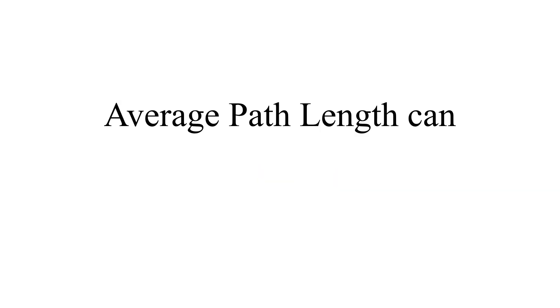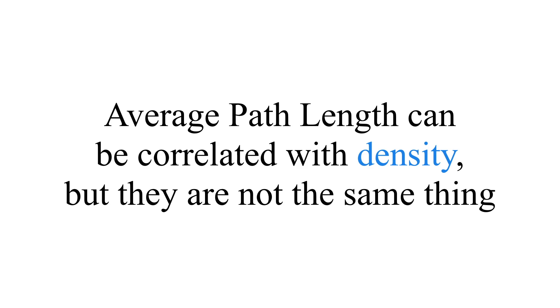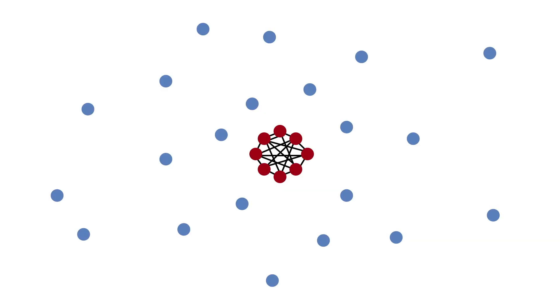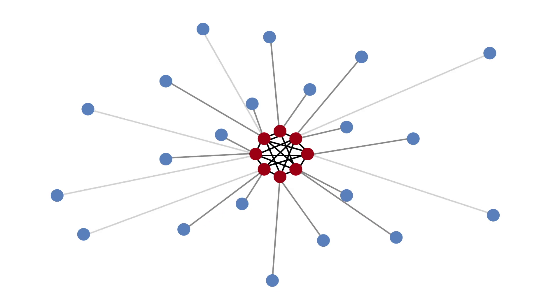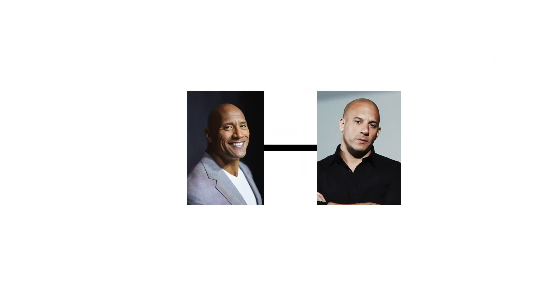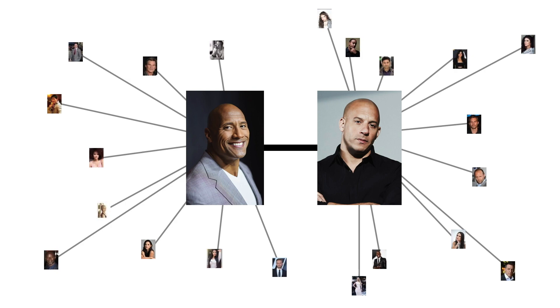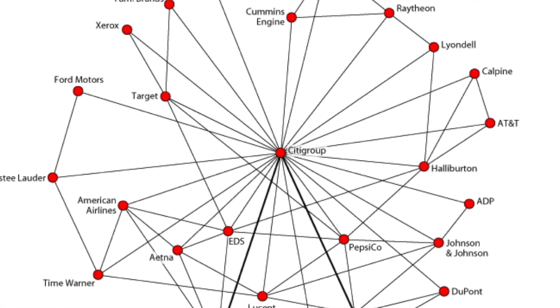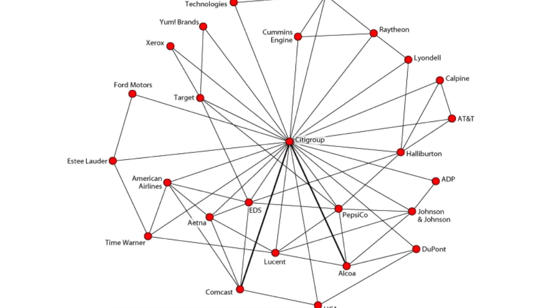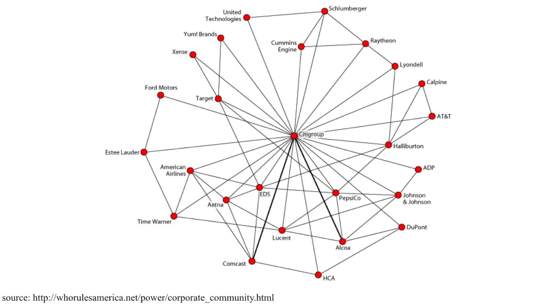Average path length can be correlated with density, but they're not one-for-one. You can have a high average path length but low density — imagine a few very highly connected nodes with everyone else plugging into them, like a star or a couple of stars connected to each other. That could be a super efficient network. Networks between businesses, for instance, often have low average path length — it doesn't take many steps to get through — but they're not particularly dense because they're trying to minimize the number of connections they have to maintain.